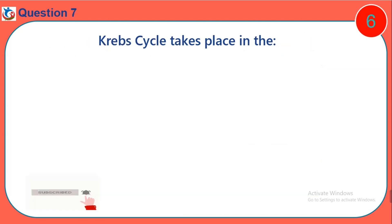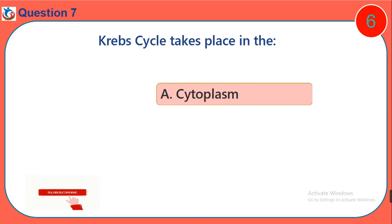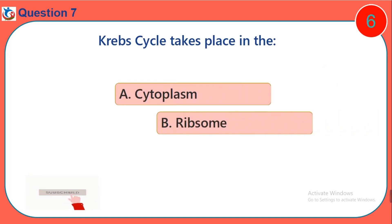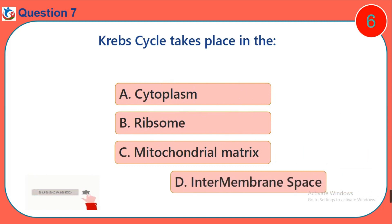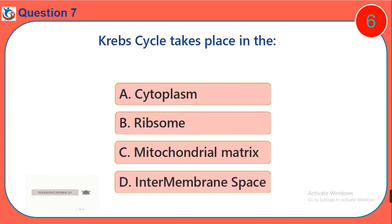Question 7. The Krebs cycle takes place in the: A. Cytoplasm. B. Ribosome. C. Mitochondrial matrix. D. Intermembrane space.